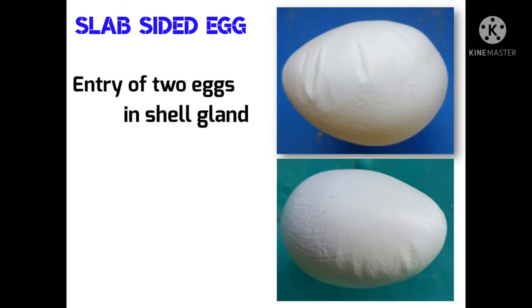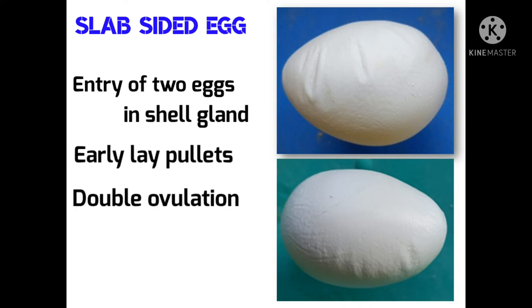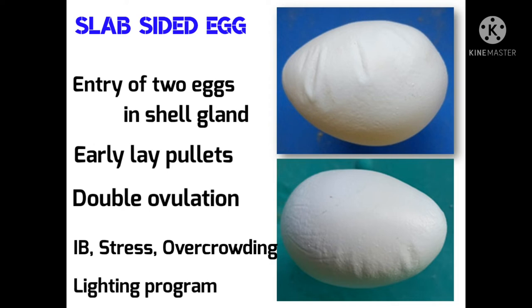Flat sided eggs normally make up less than 1% of total production. They are most commonly produced by pullets in early lay and may be the result of double ovulation or being held over an extra day in the shell gland. This defect is often observed in diseases like infectious bronchitis, in stress conditions, in crowding, or incorrect or changes in the lighting program.